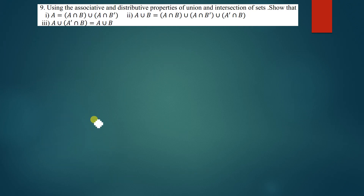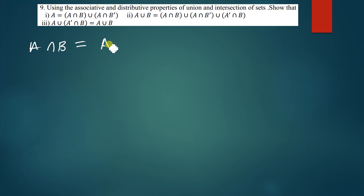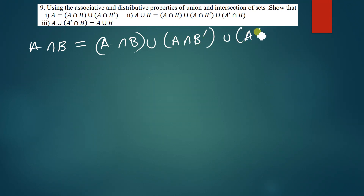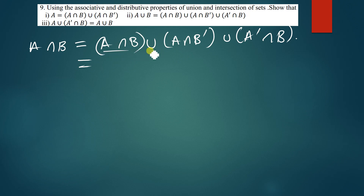The next question asks us to prove that A∩B equals (A∩B) ∪ (A∩B') ∪ (A'∩B). I'll look at the common parts on the right hand side. I can see A intersection appearing in the first two terms, so I write A outside the brackets.